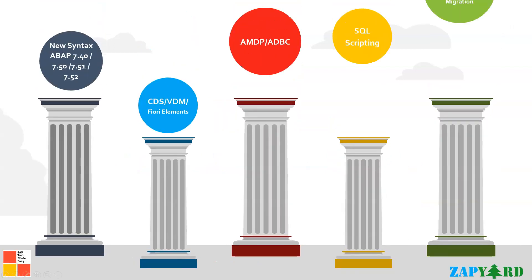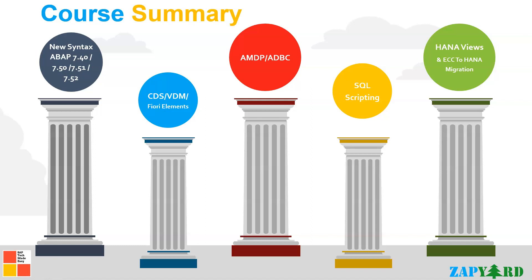If you are wondering what we will cover in these 25 classes, these are the 5 topics we will be mastering. We will cover the new way of writing ABAP programs in ABAP 7.40, 7.50, 7.51, and 7.52. ABAP programming is evolving in leaps and bounds and you do not want to be left behind with the old way of programming.